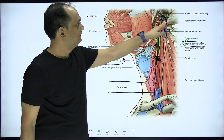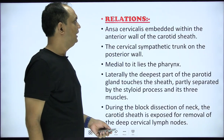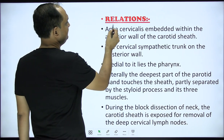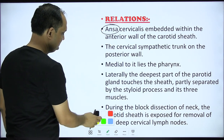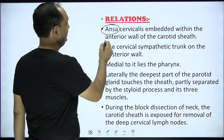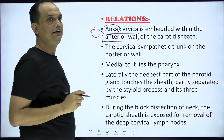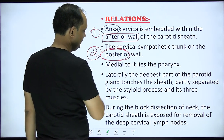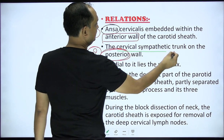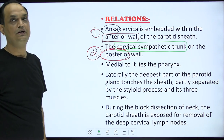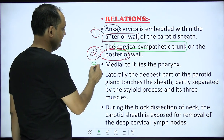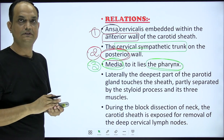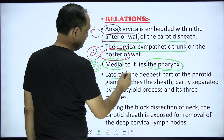Now for the other relations of the carotid sheath — another exam question. Ansa cervicalis, which means a loop, is present on the anterior wall of the carotid sheath. So the anterior relation of the carotid sheath is the ansa cervicalis. On the posterior wall you have the sympathetic trunk — specifically the cervical part of the sympathetic trunk. Medially you have the pharynx, as it is present on both sides of the pharynx.